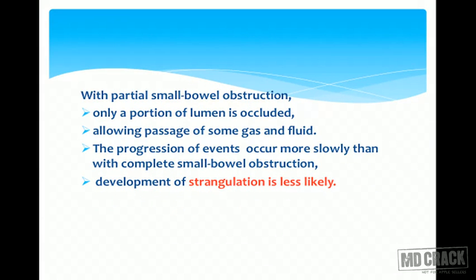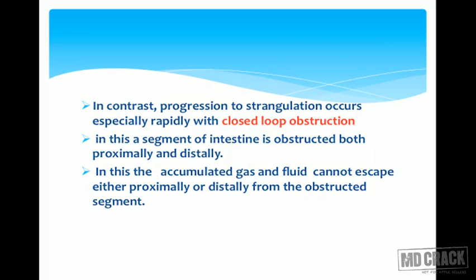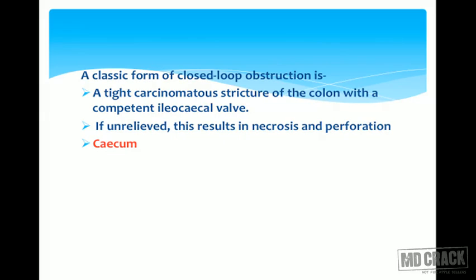In partial small bowel obstruction, only a portion of the lumen is occluded, allowing passage of some gas and fluid. Progression of events occurs more slowly than with complete small bowel obstruction, so development of strangulation is less likely. In contrast, progression to strangulation occurs especially rapidly with closed loop obstruction, where a segment of intestine is obstructed both proximally and distally, and accumulated gas and fluid cannot escape from either end.